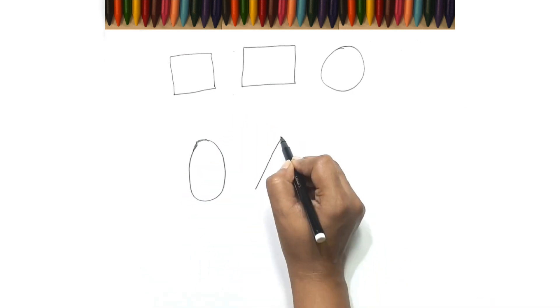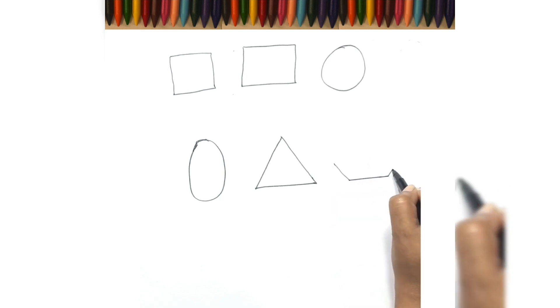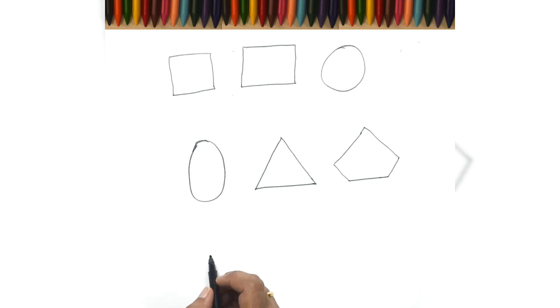I am drawing here square, rectangle, circle, oval, triangle, pentagon, hexagon, octagon, cone.